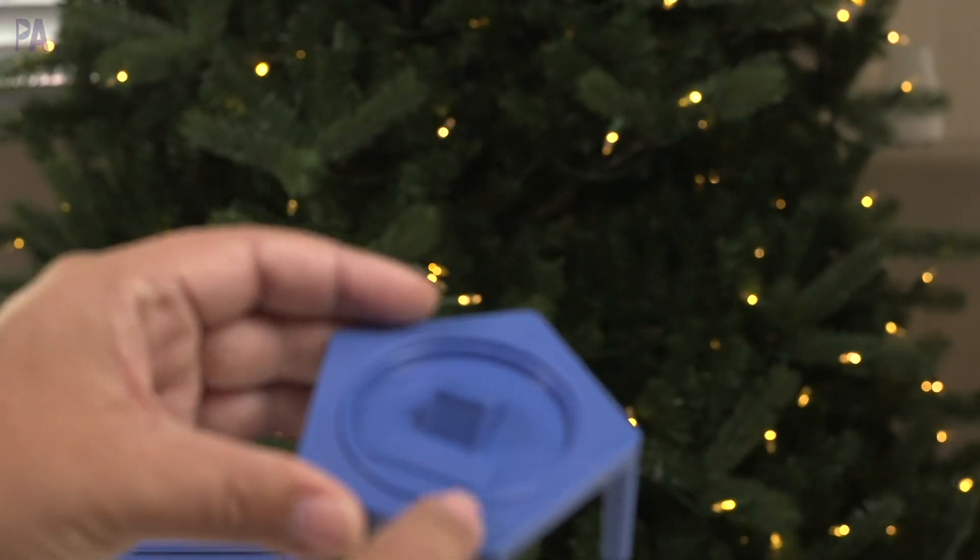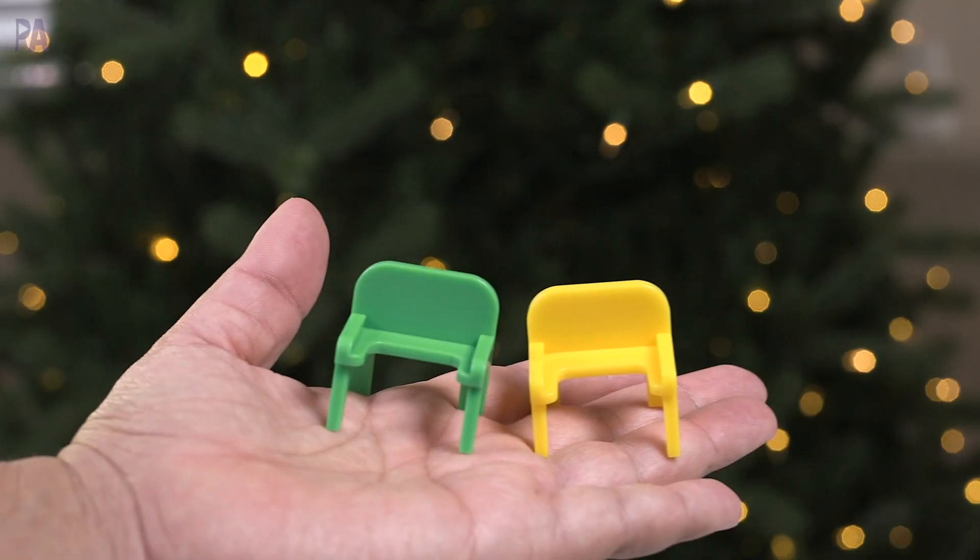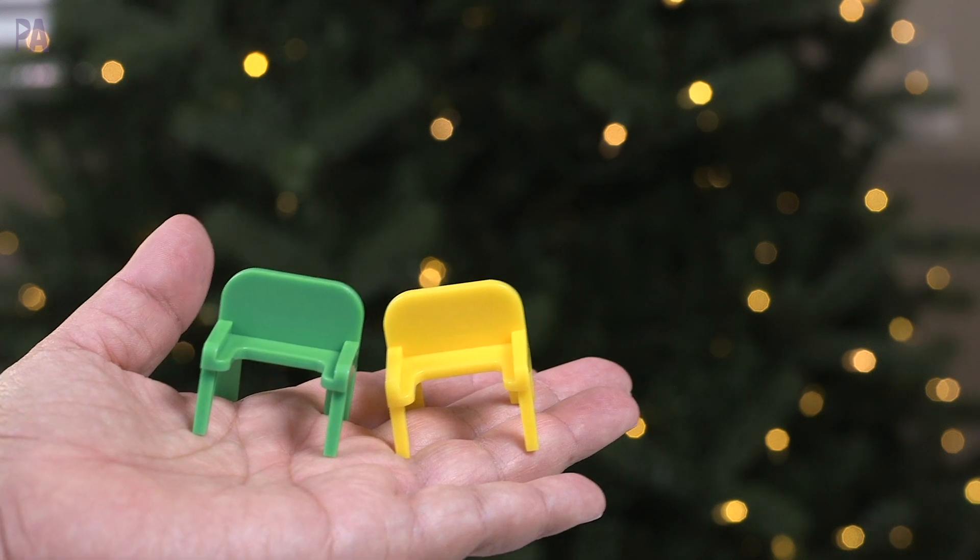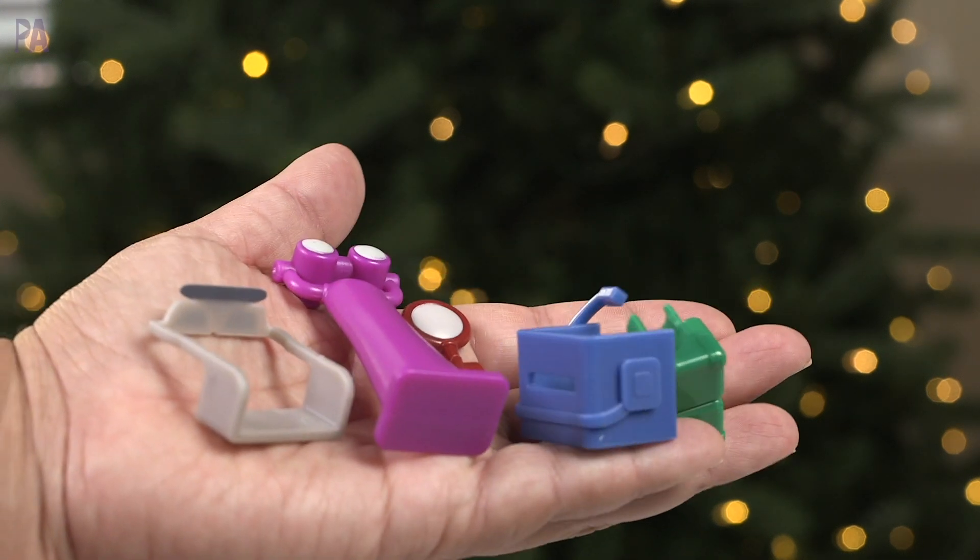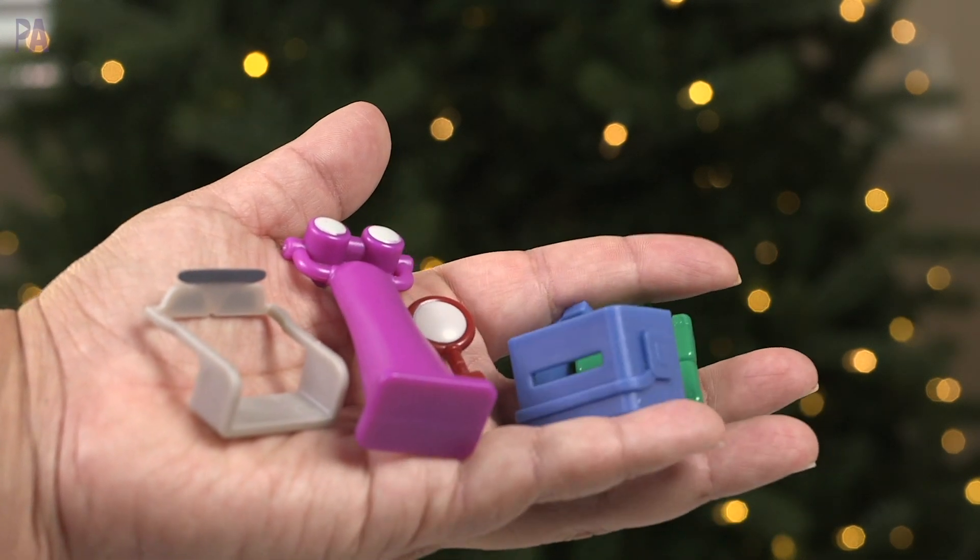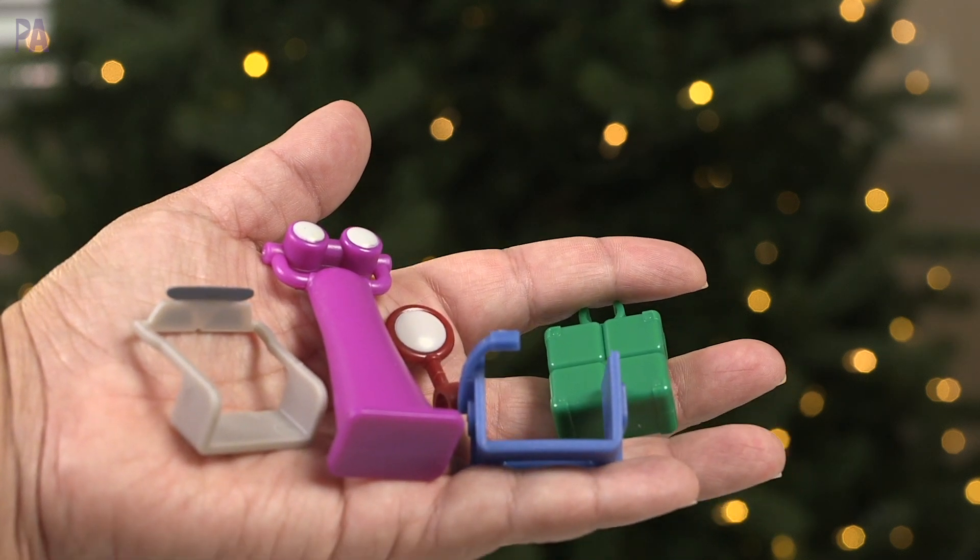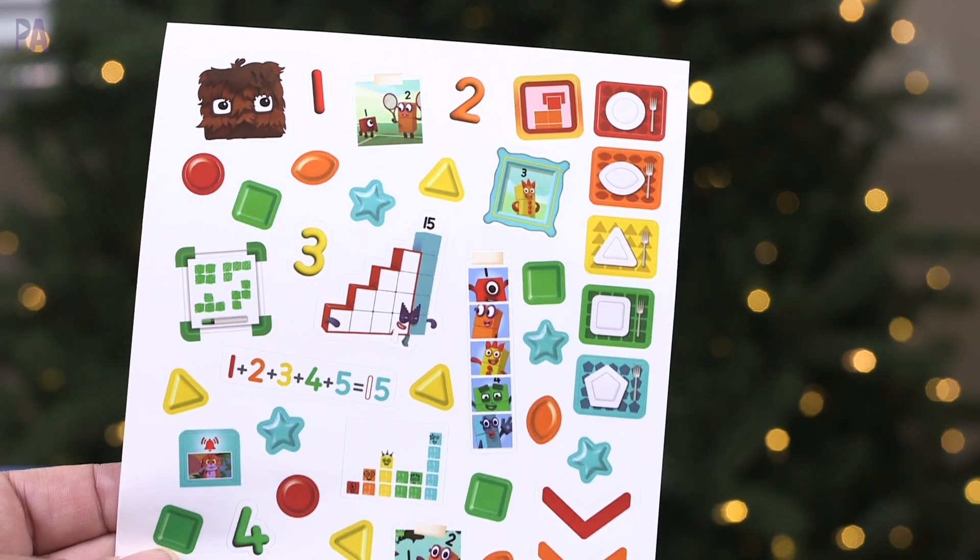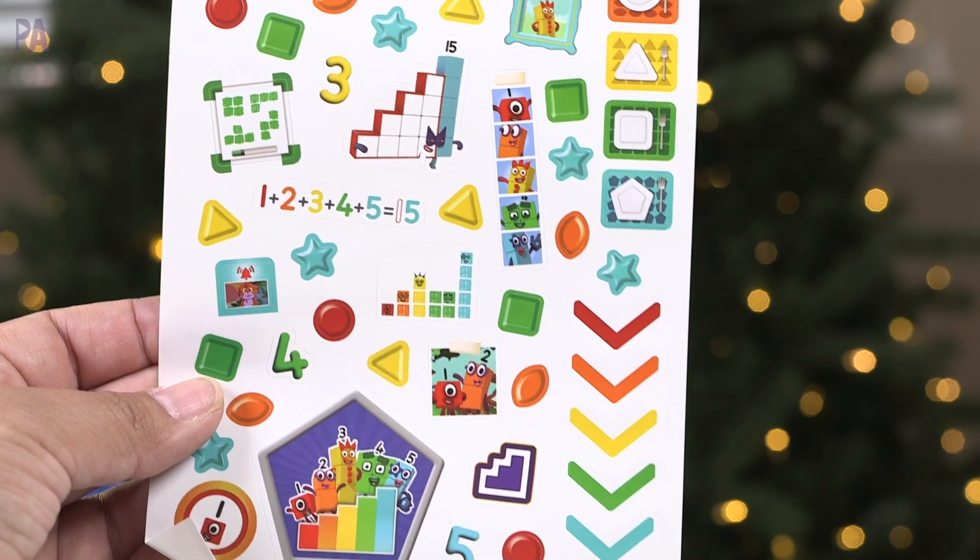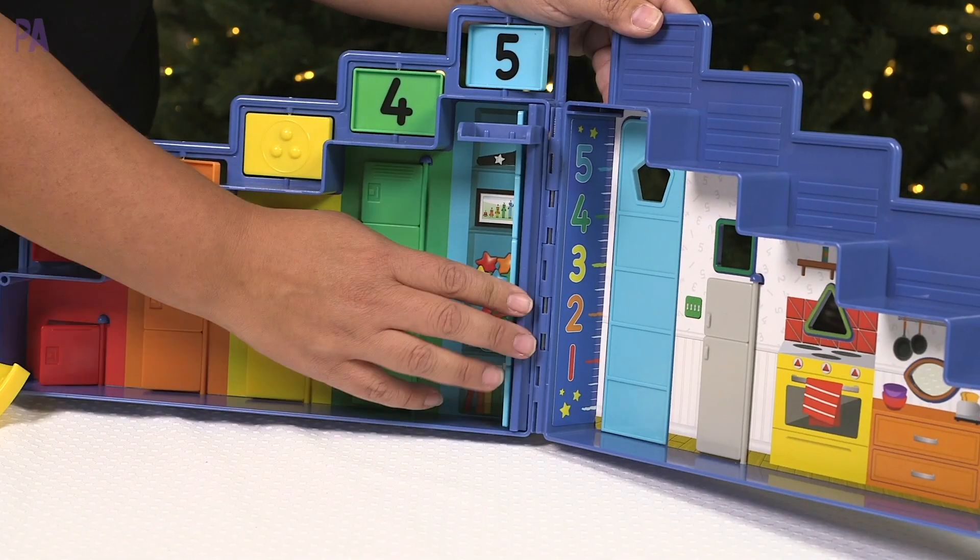You get a rotating table, five chairs to go with that rotating table in different colors. You get five agent accessories which are the disguises, a headset, binoculars, magnifying glass, and a briefcase. The sticker sheet that comes with it you can use to decorate your number steps and a getting started guide.